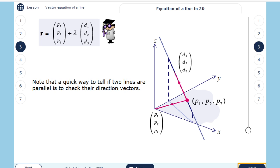Note that a quick way to tell if two lines are parallel is to check only the direction vectors. If the direction vectors are parallel, then the lines are parallel, and it's very easy to see this property.